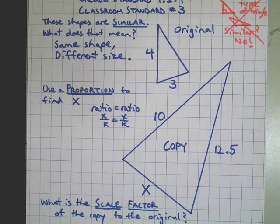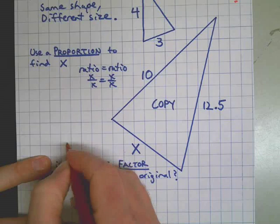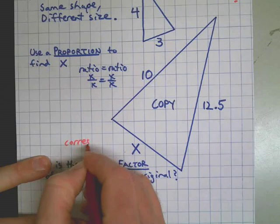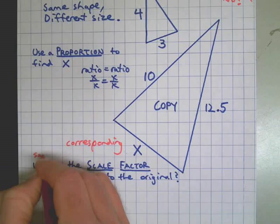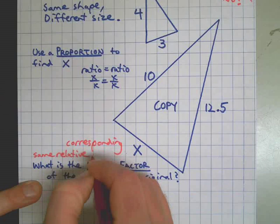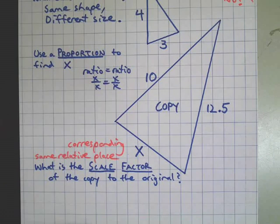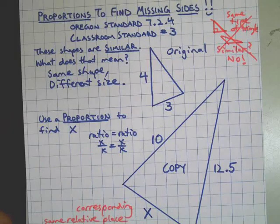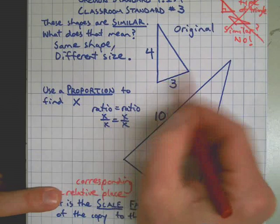So first of all I want to find corresponding sides. Back over to a sidebar here, I'll go down here. Corresponding, as we've talked about, corresponding means same relative place on two similar or congruent shapes. So let's mark all the corresponding sides here. I think that's a good idea on a problem like this.